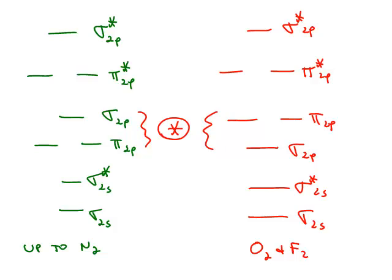The difference in the table is the energy of the next two levels. Depending on how many protons the atoms have in their nucleus, either the pi 2p is lower in energy or the sigma 2p is lower in energy. So you have to use the correct diagram for the correct molecule. After that level, then the pi star 2p and the sigma star 2p are exactly the same. So there's only a switching between these two molecular orbital levels.